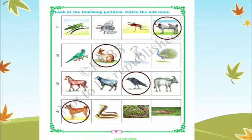Look at the following picture and circle the odd one. Here, what is odd — we have to circle that. See: the first one has grasshopper, housefly, cockroach, and cow. The remaining all are insects, and cow is the odd one, so we have to circle the cow.